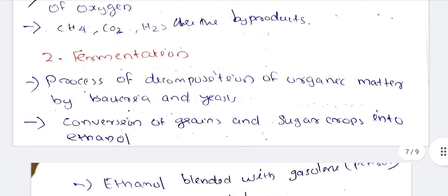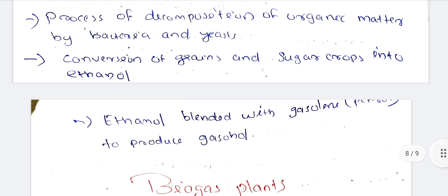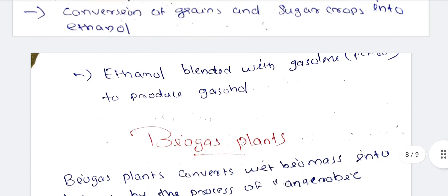Next technique is fermentation: the process of decomposition of organic matter by bacteria and yeast. We use the conversion of grains and sugar crops into ethanol. We use sugar content crops with bacteria to produce ethanol. This ethanol is blended with gasoline.